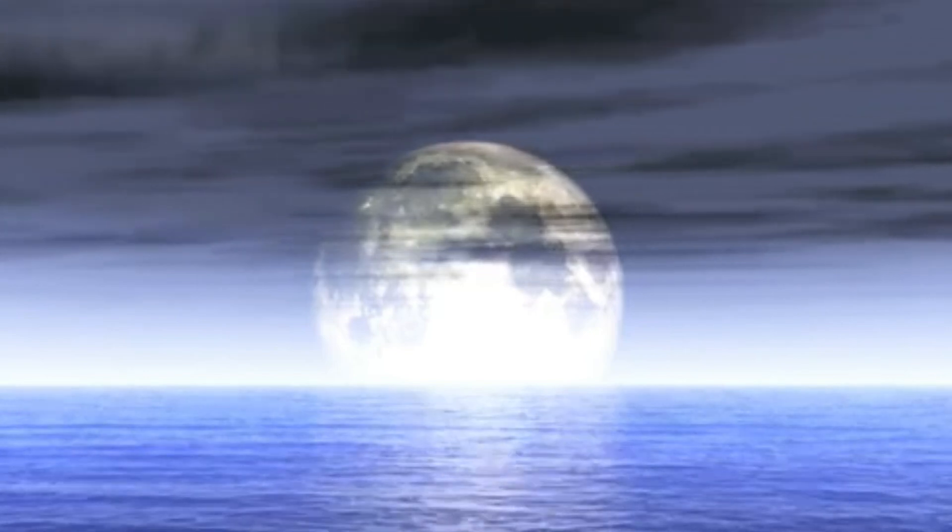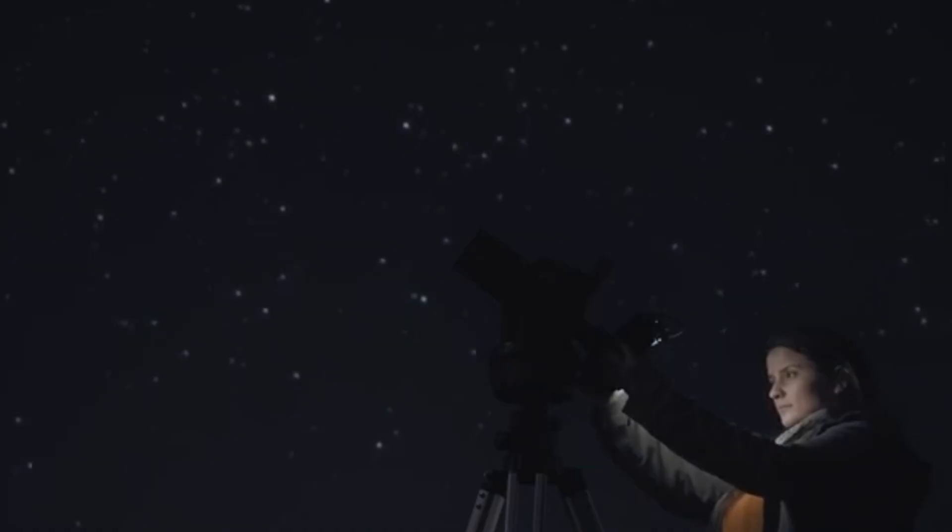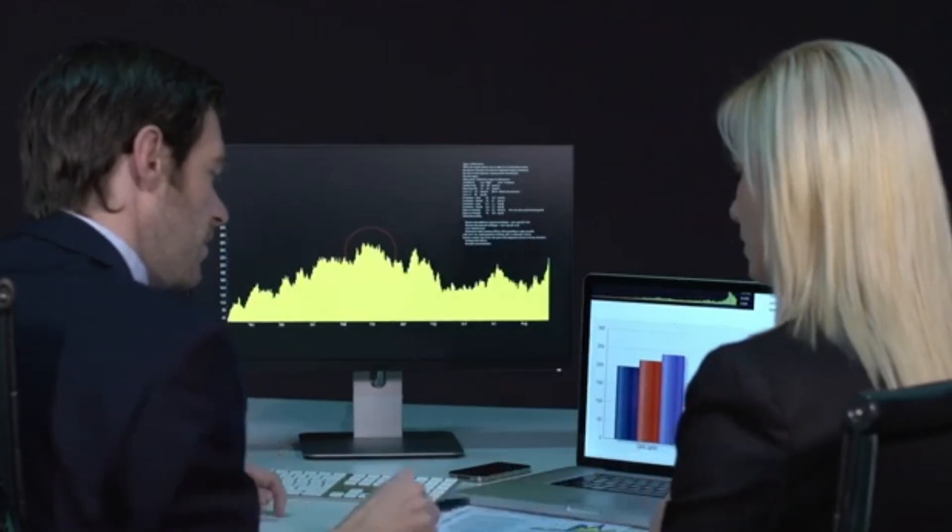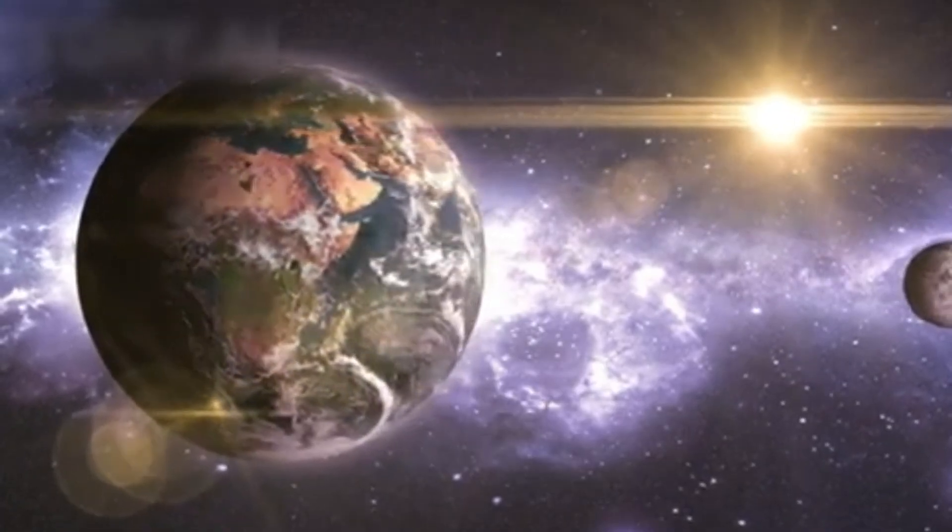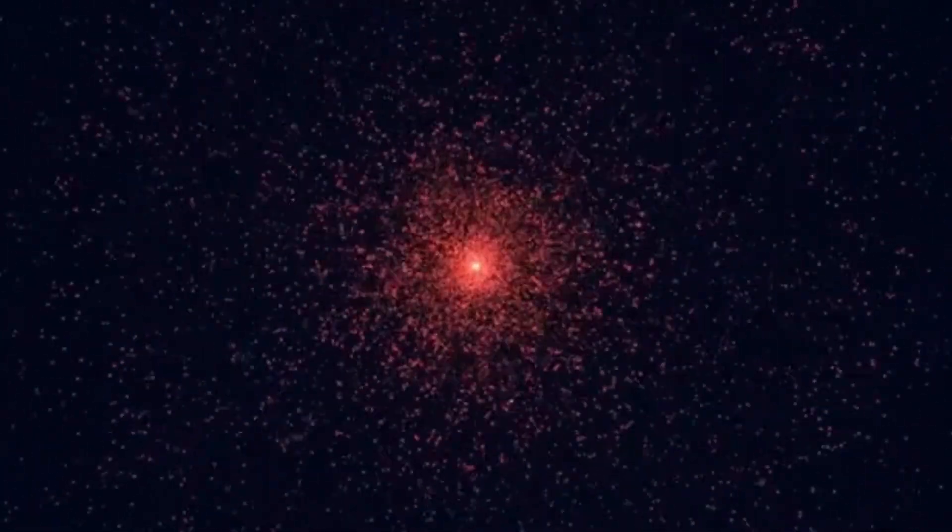But instead of being boiling infernos, they could be warm, watery worlds. These sub-Neptunes could be surrounded by a thick hydrogen-rich atmosphere and, crucially, a massive layer of water, possibly making up as much as 90% of the planet's total mass. This vast ocean could harbor the basic ingredients for microbial life.